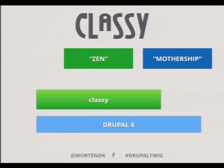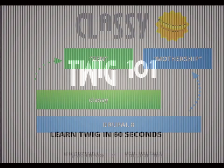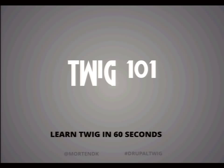The idea is you have Jubilate, you have Classy, and basically if you're building on base themes, you have the Zen kind of theme versus the Mothership kind of theme — either something completely stripped of everything, or a bunch of sensible classes and structure you can rely on. Those are the two different ways.